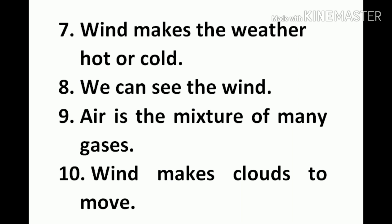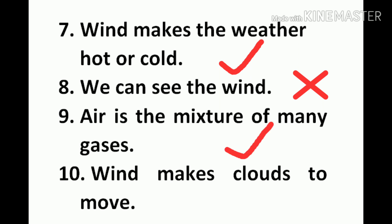Number 5: Wind makes the weather hot or cold. Is this true? Yes. Put a tick here. Number 8: We can see the wind. Is the sentence right or wrong? It is wrong. Put a cross. Number 9: Air is the mixture of many gases. True or false? It is true. Put a tick here.